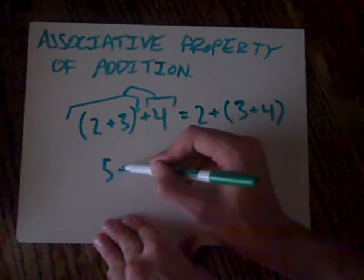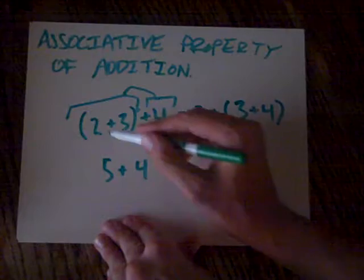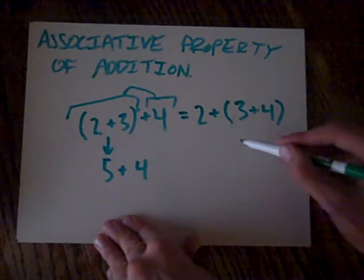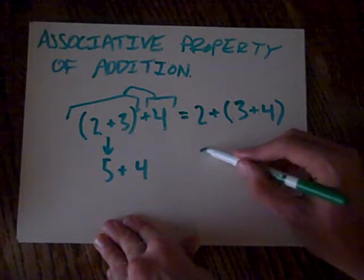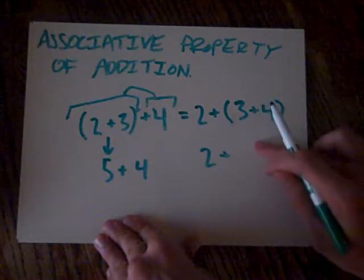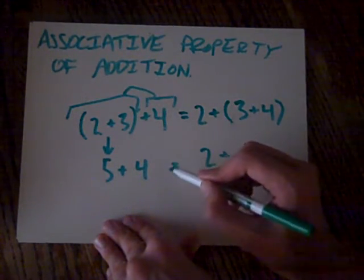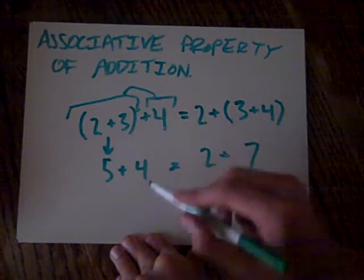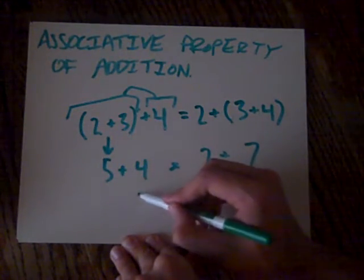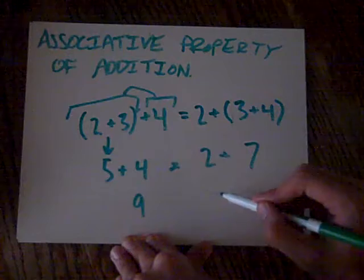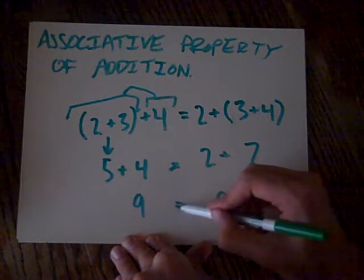So we got 5+4, right? This turns into 5. We've got 2+3+4 is 7. So what you get is 5+4 equals 9, 2+7 equals 9, and does 9 equal 9?